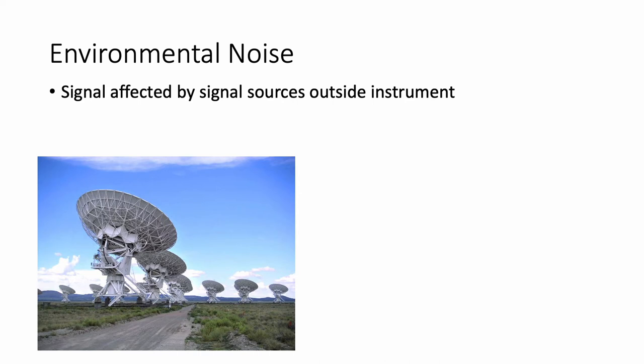Next up we have environmental noise. Environmental noise is basically some sort of signal that's being picked up by your instrument that does not originate within your instrument. And I put a picture of the very large array, which is a radio telescope array in New Mexico, because this can sometimes happen when part of your instrument can serve as a radio receiver. So if you have a long length of wire that can turn into a radio antenna. So the reason I put the VLA here is because there was an interesting phenomenon that people observed at the VLA where there was a sudden microwave signal coming in.